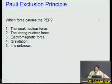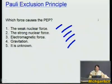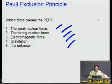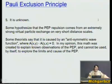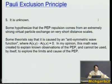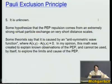What force causes the Pauli exclusion principle? Is it the weak nuclear force, the strong force, electromagnetic force, gravitation — or is it not known? The answer is that it isn't really known. We physicists pretend we know everything, but really we take observed facts, mathematize them, and run with them. We make clear predictions about strengths of buildings and future positions of particles, but something like the Pauli exclusion principle, in my view, isn't fully understood.